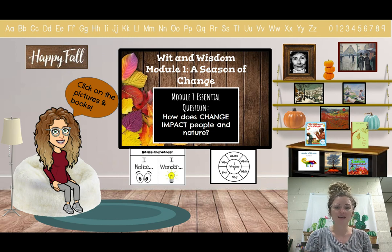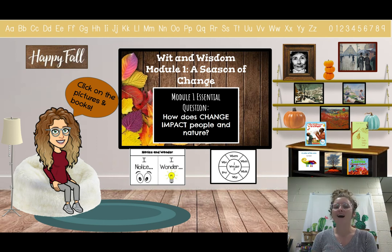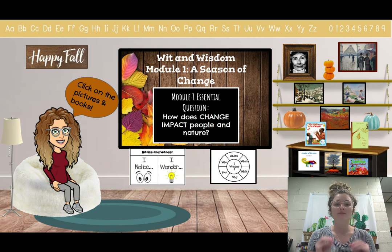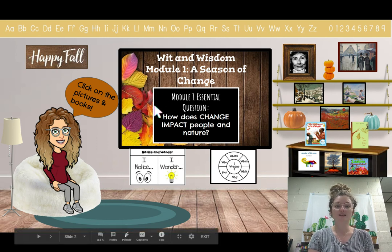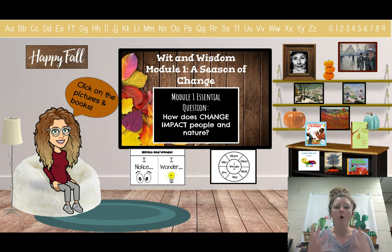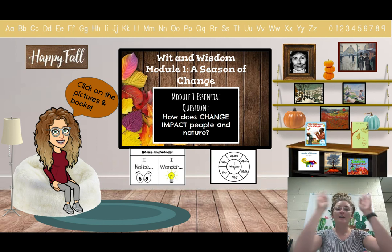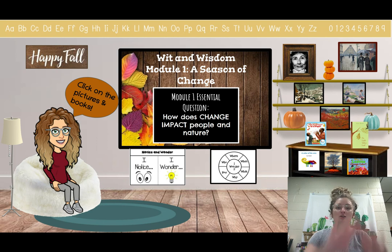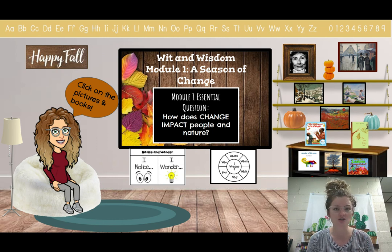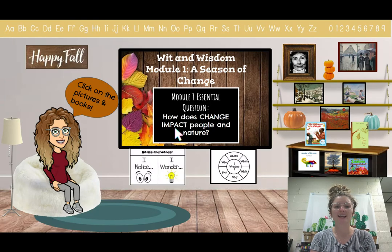Our theme this year is called A Season of Change. We have four important questions for every lesson. On this first page, we have an essential question. I like to think of that as a big pizza — we can't eat a whole pizza in one bite. Our first big pizza question is: how does change impact people in nature? I made the words change and impact big — those are going to be two vocabulary words.